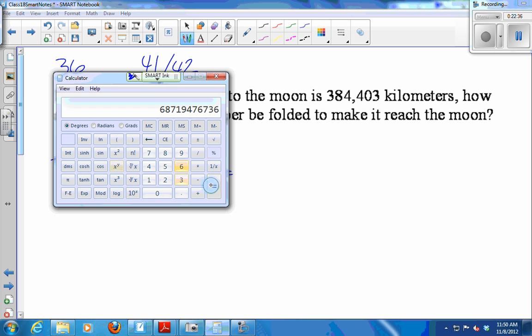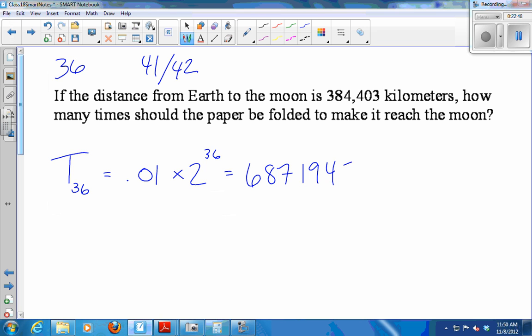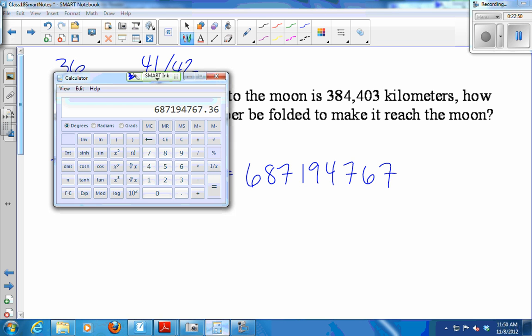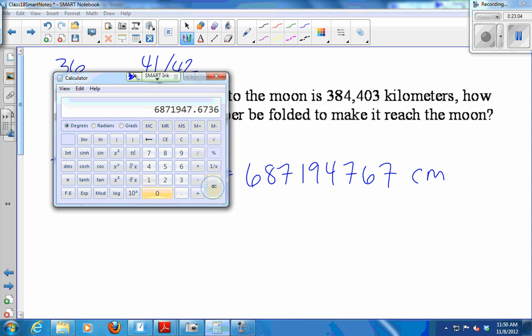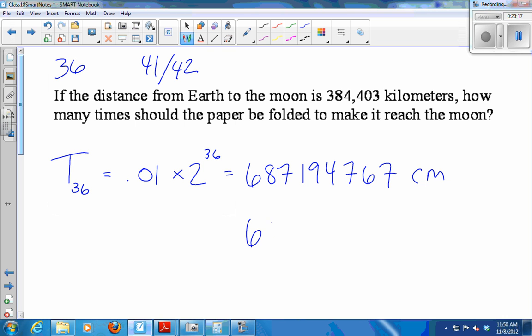So 2 to the 36 times 0.01, and I get 687,194,767. I think that was it. Yeah. That's centimeters. We've got to convert it to kilometers in order to measure against the distance to the moon. So to convert it to kilometers, first I go to meters. I divide by 100. That gives me meters. Then to get to kilometers, divide that by 1,000. So I get 6,871 kilometers. That's a lot of meters. Not enough. Were you off by a factor of 10 or 100 or something? Yeah.